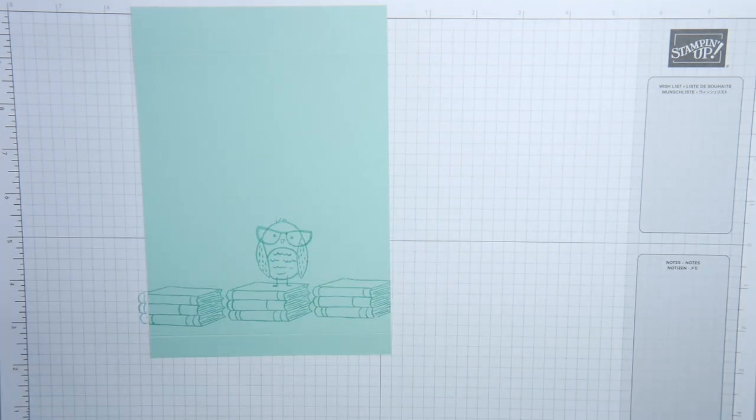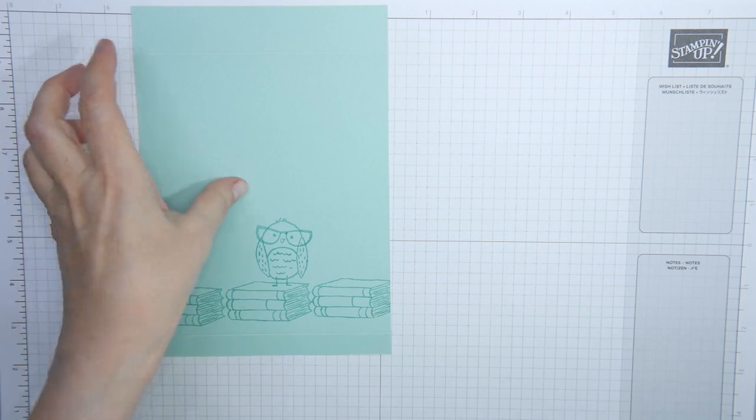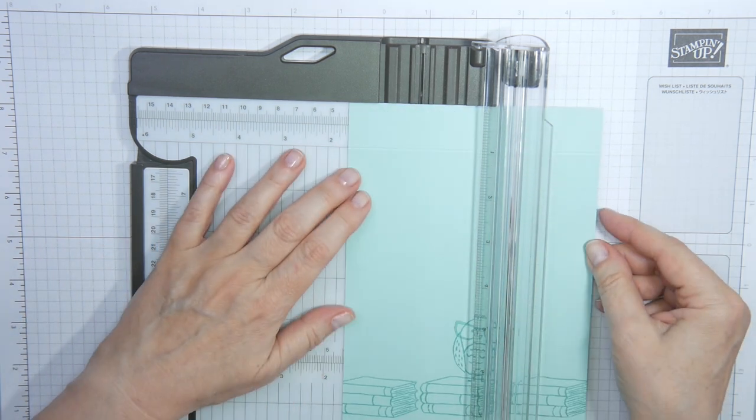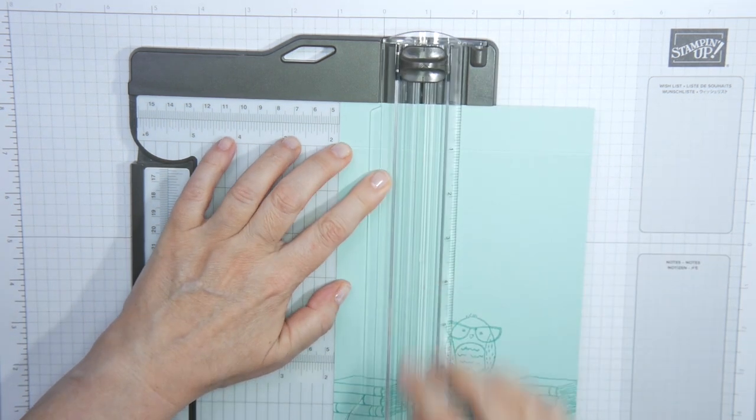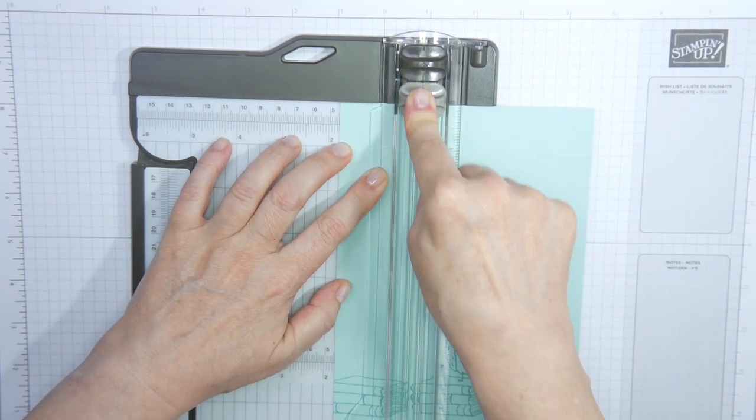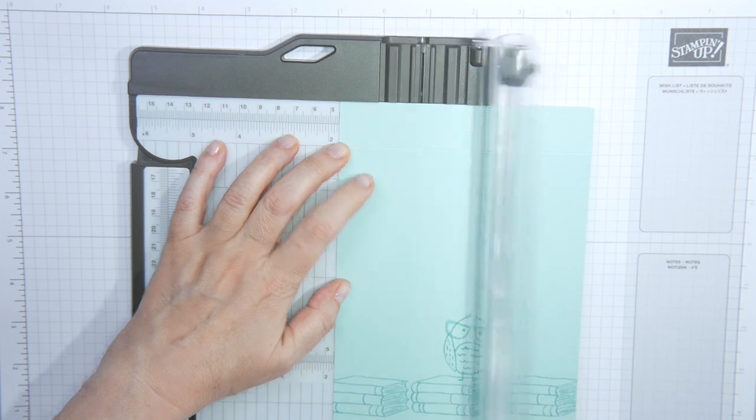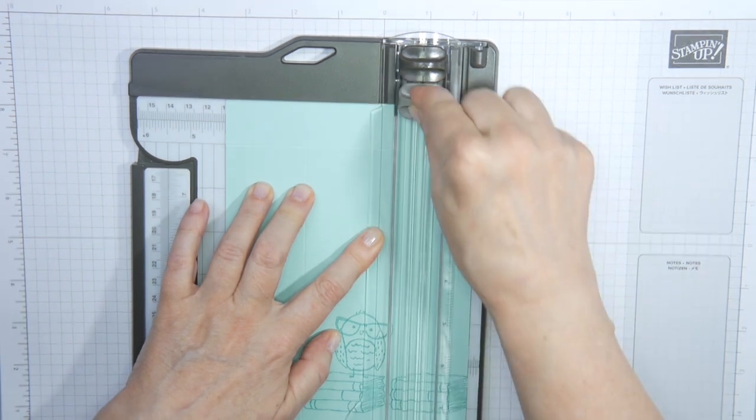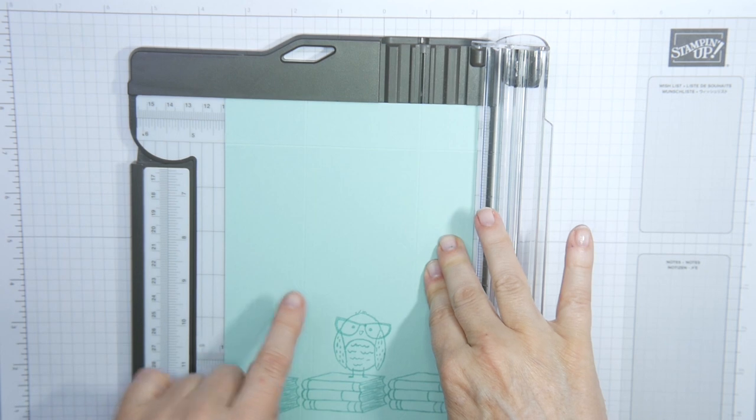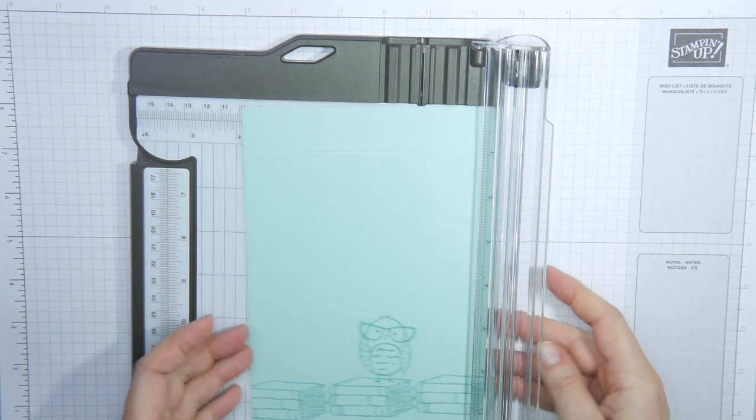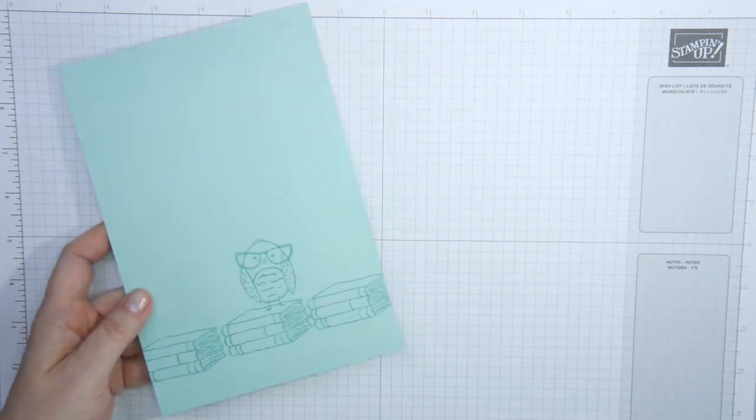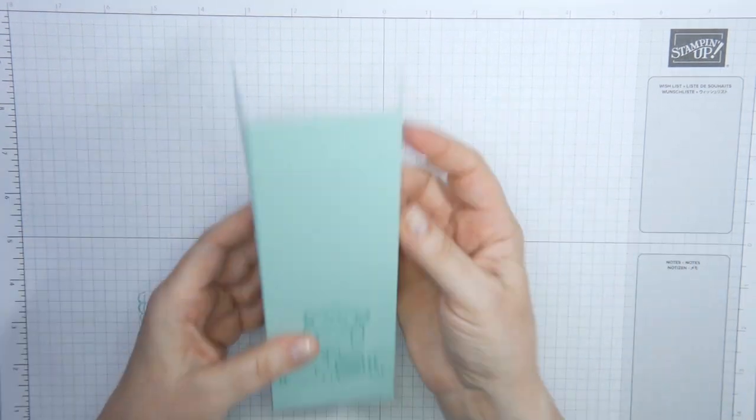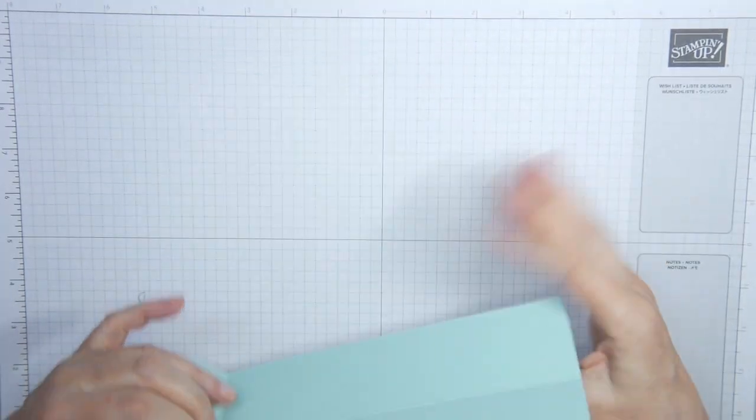Then we'll do some more scoring. Now with the short side top. And you're going to score this at one and three quarters. And at four and a quarter. In centimeters. That is four and a half and 10.9 centimeters. And now the bird is, when I fold this. Now you can see that the bird is in the right position on the envelope. Just two more scorelines to fold.